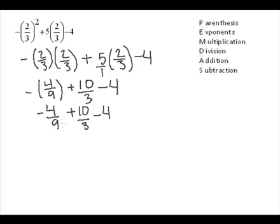Now notice that we don't have the same denominator so we have to look for a common denominator. Let's make this negative four into a fraction too. So our common denominator in this case will be nine.